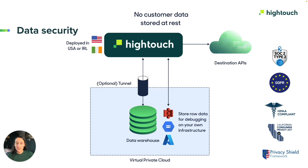Customer data only flows through Hightech infrastructure during active syncs. After sending data to downstream destinations, Hightech stores request and response payloads for logging and debugging purposes. You can choose to store these logs in your own cloud storage on business tier plans, so no customer data is stored at rest on Hightech managed infrastructure.